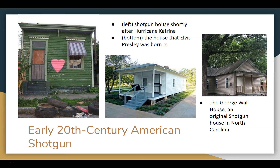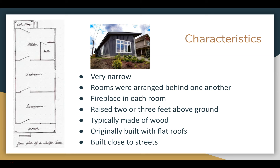Next we have the Shotgun House. I just wanted to point out that the middle house shown is where Elvis was born, so that's pretty cool. They're very narrow, rooms are arranged behind one another with no halls, and there's a fireplace in each room — though they usually share fireplaces except for the kitchen. It was raised two or three feet above the ground because of flooding. They're based in the South.